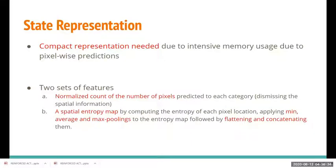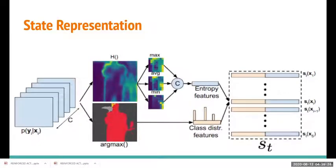One important point is that we cannot just use pixel-level predictions for a particular image or region as our states due to their intensive memory usage. For this reason we need a more compact representation, and two sets of features were introduced. The first is the normalized count of the number of pixels predicted for each category while ignoring spatial information. The second is the spatial entropy map that computes the entropy of each pixel location, then applies mean, average, and max poolings to the entropy map, followed by flattening and concatenating them.